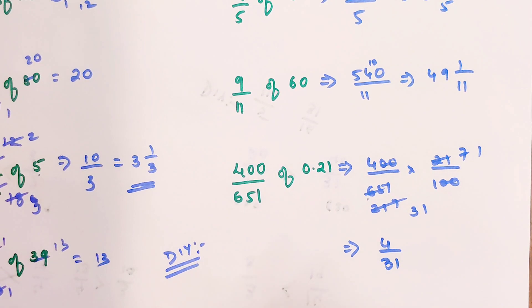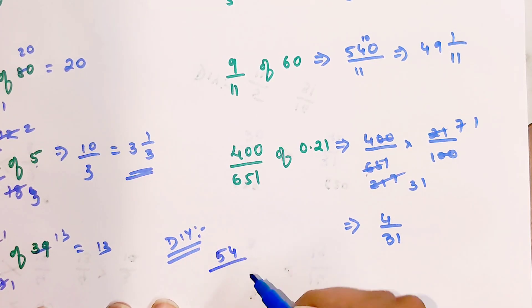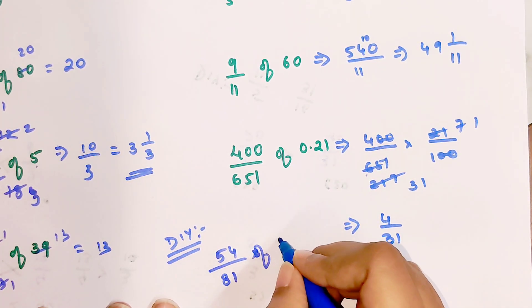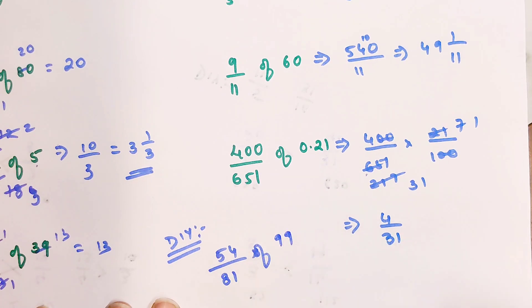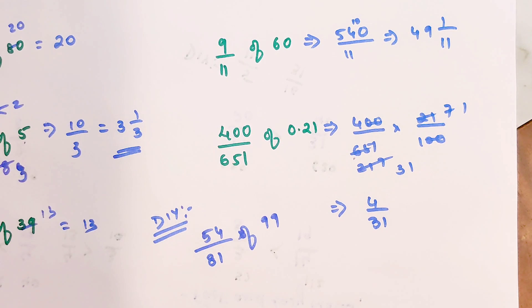So now time for your do-it-yourself. Let me think. I'll give you something a little bit tricky: 54 upon 81 of 99. Do let me know your answers in the comment section.